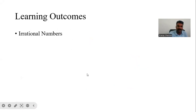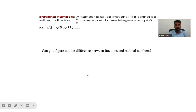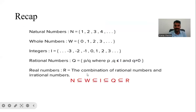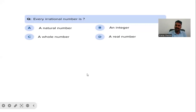Moving to our next slide — learning outcomes. We will see what exactly irrational numbers are. Irrational numbers are those numbers that cannot be expressed in p over q form. Examples: root two, root three, root five, root 11 — they cannot be represented in p over q format. Can you figure out the difference between fractions and rational numbers? Yes — fractions are positive, however rationals can be negative. Every irrational number: is it a natural number? No. Is it an integer? No. Is it a whole number? No. Is it a real number? Yes, because real numbers are the combination of rational numbers and irrational numbers.